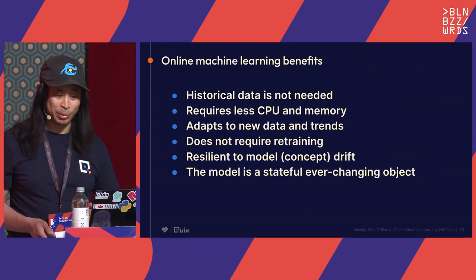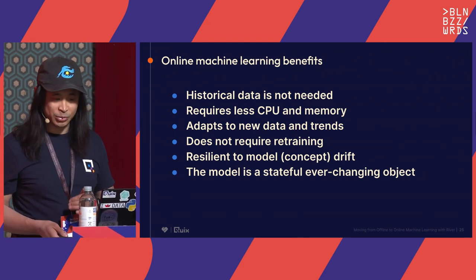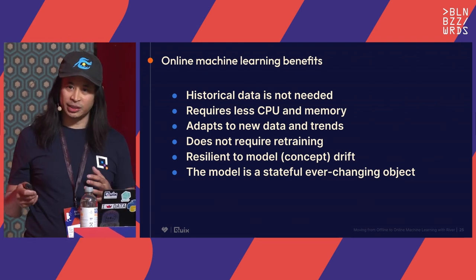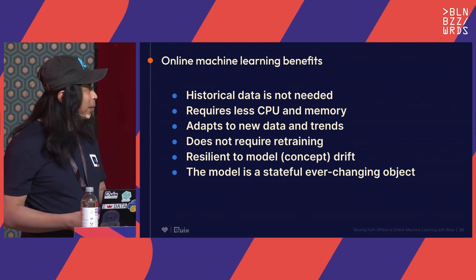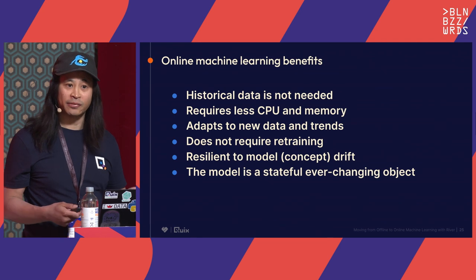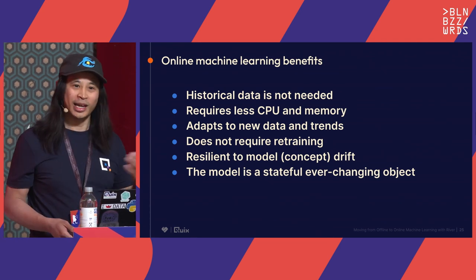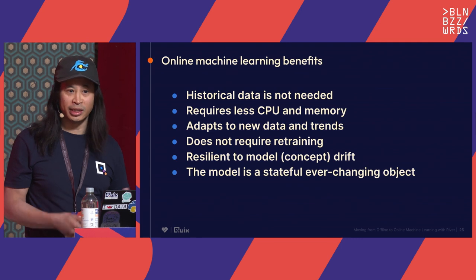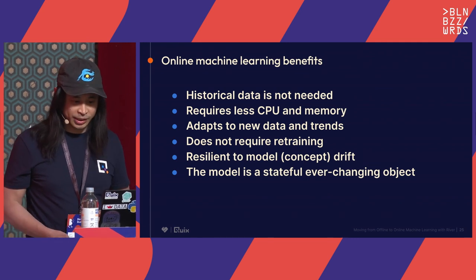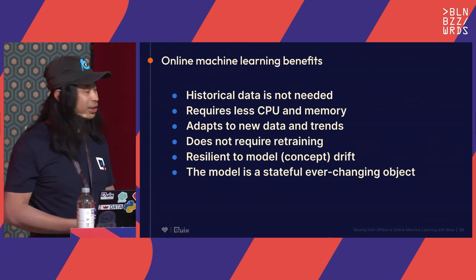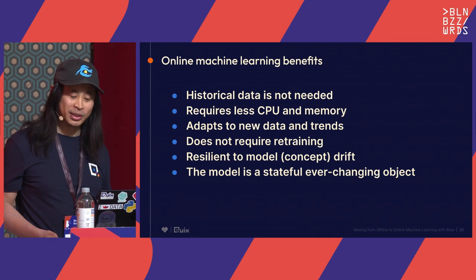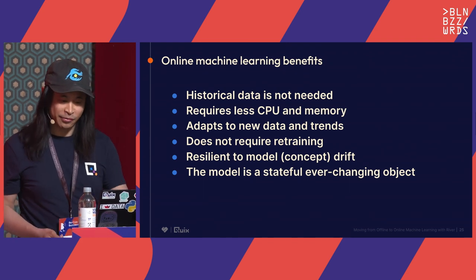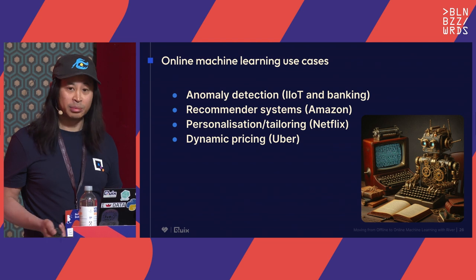The second most important point is that online machine learning is really resilient to model and concept drift. Concept drift is where the underlying distribution in the data changes over time — changes in the relationship between the feature and the target variable — causing degradation in the prediction function. Normally in a batch scenario you'd have to retrain. But with online machine learning you adapt over time. During the pandemic, for instance, people changed their shopping habits, and the best machine learning systems would use online learning to start adapting to the environment early. The model is a stateful, ever-changing object that just keeps changing.